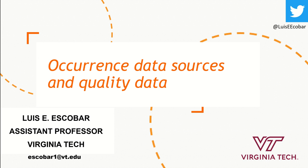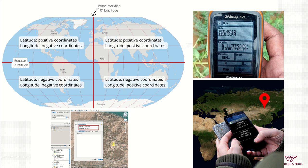Hello everybody, this is Luis Escobar. I'm going to talk today in this video about occurrence data sources and data quality to build ecological niche models. A fundamental aspect of working with occurrence data is that we are working generally with reports of species or diseases in geographic space.